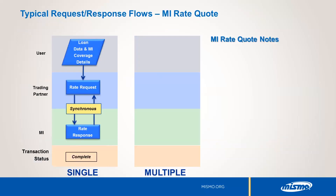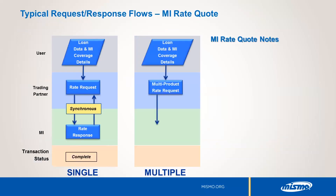The request-response flow for a multi-product MI quote is identical to the single-quote flow. The workflow begins with the user submitting loan and MI coverage data. The trading partner transmits the MI multi-product rate quote request file to the MI company. Again, the MI rate quote transaction is synchronous, so the trading partner connects to the MI company's systems and holds the connection until the MI company responds with the MI rate quote response file. This response includes multiple MI quote products, each with a rate quote ID and rate quote PDF. Note that the PDF may be an actual document or a link that renders a document when opened in a browser.